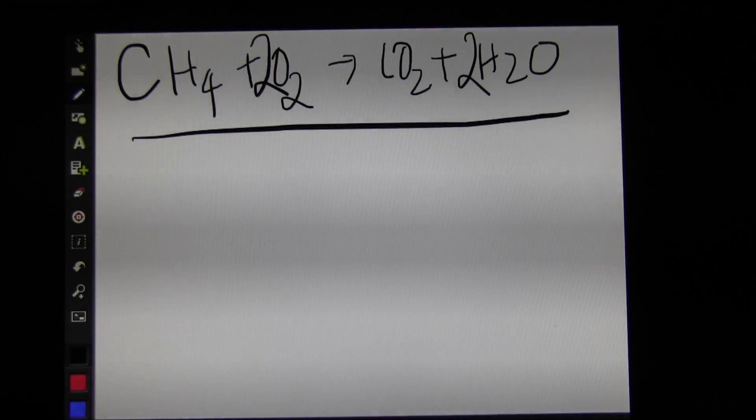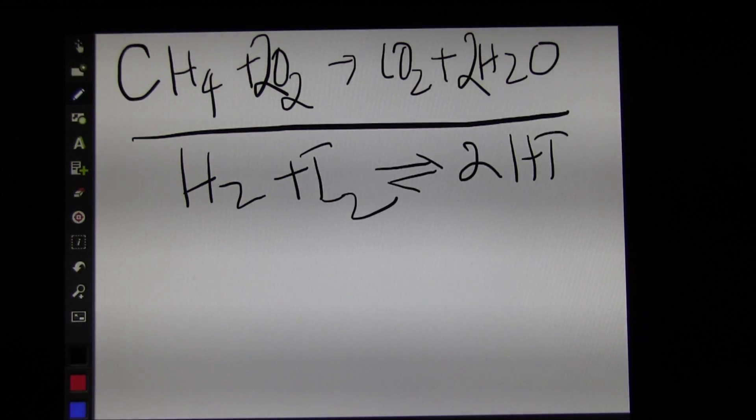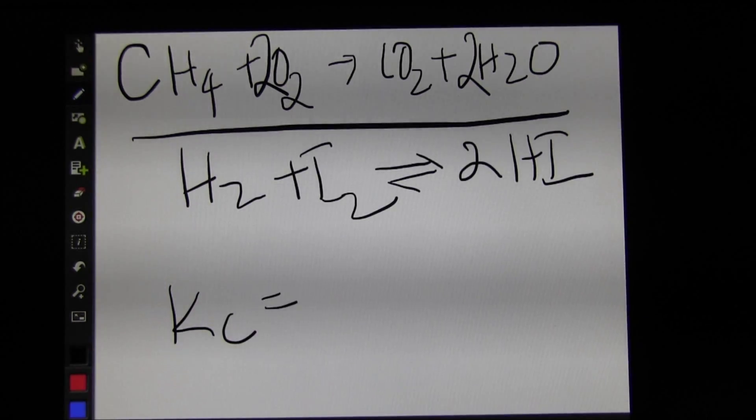If you want to solve a problem, it's pretty easy to show them how to do it. Let's say for the equation H2 plus I2 reversibly giving 2HI, I can write the equilibrium constant expression.